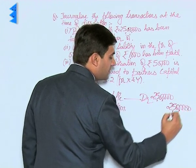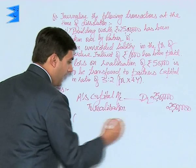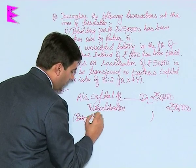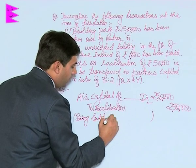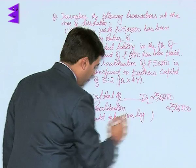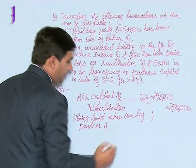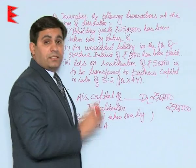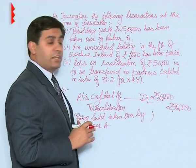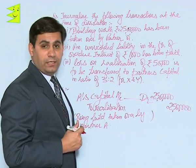Remember, this entry has to be passed in the format of a journal. The narration would be: being building taken over by partner A. So the complete entry is A's capital account debited to realization account, on account of building taken over by A.